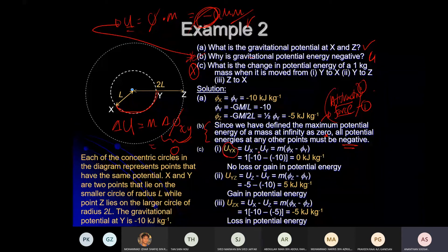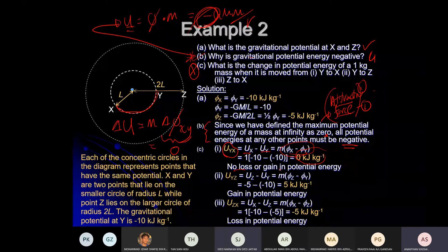Moving from Y to X: ΔU = U_X – U_Y = m(φ_X – φ_Y). φ_X = –10 and φ_Y = –10, so the difference is zero. No change in potential means no change in potential energy.